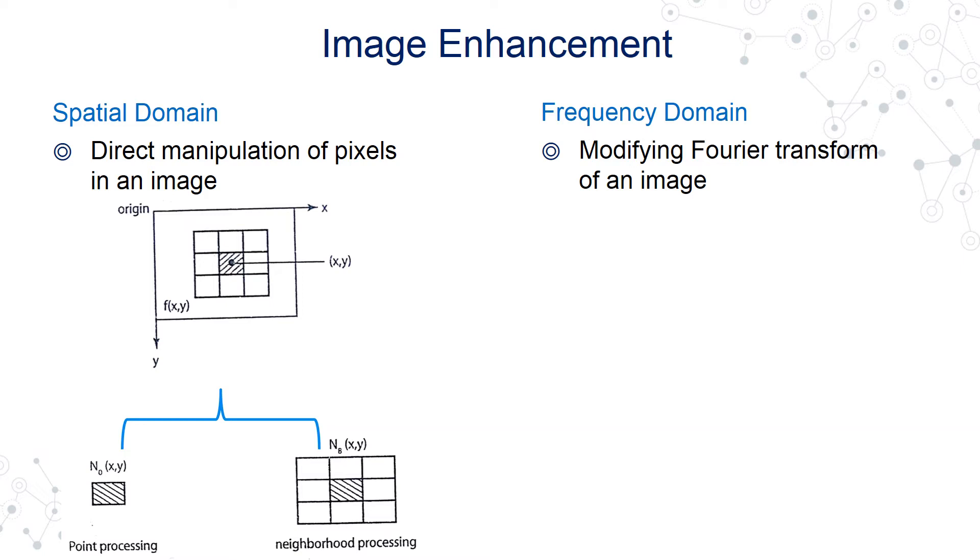We have started with spatial domain transformations wherein transformation can be done by two ways. One, either you do point processing where you directly do transformation on the pixel itself. Or other, you work on the neighbors of the pixel and then apply the combined transform through the neighbors on the pixel that you want to work on.